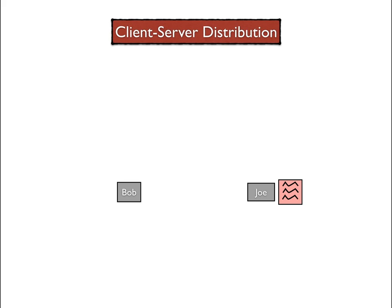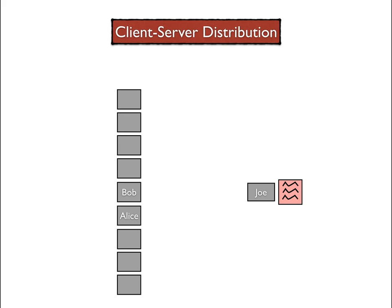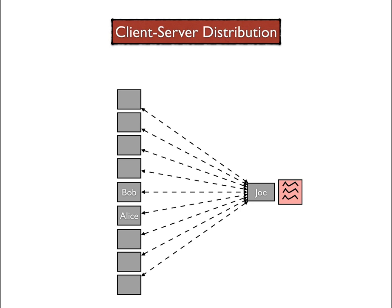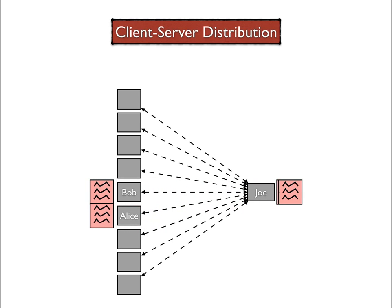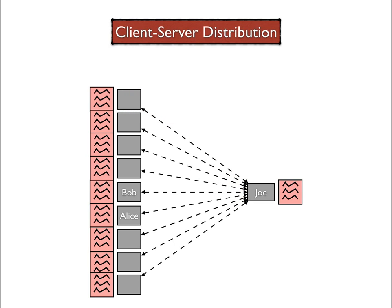Now, let's say not only Bob wants a copy of the file, but also Alice, and a whole mob of enthusiasts. They will all establish connections to Joe and request the same red file. Joe will then provide the file to Bob, then Alice, and then everybody else. In this case, in which the content is really popular, it is possible for Joe's bandwidth and computational power to be insufficient to serve all the demand for the file.